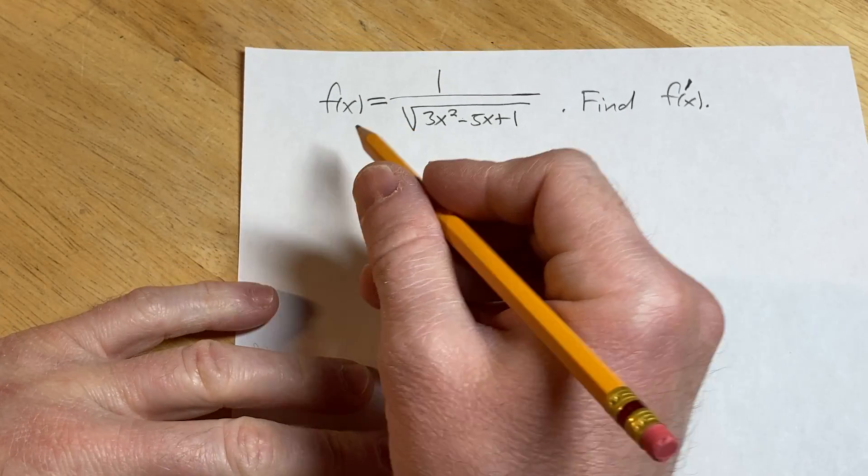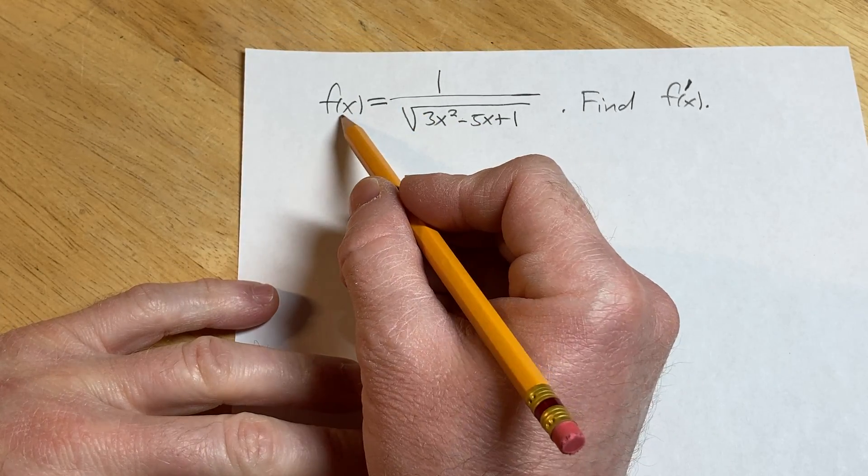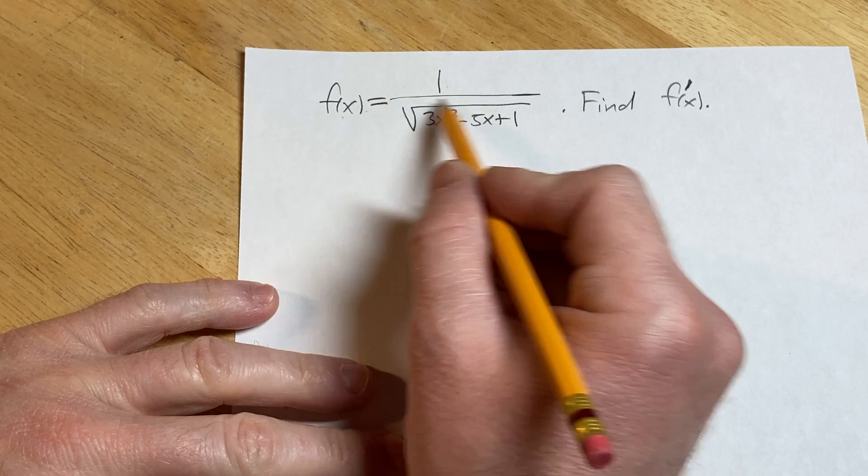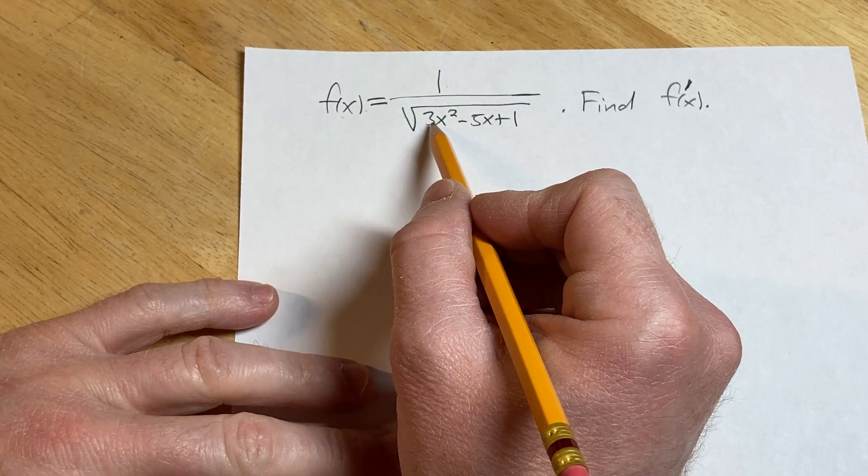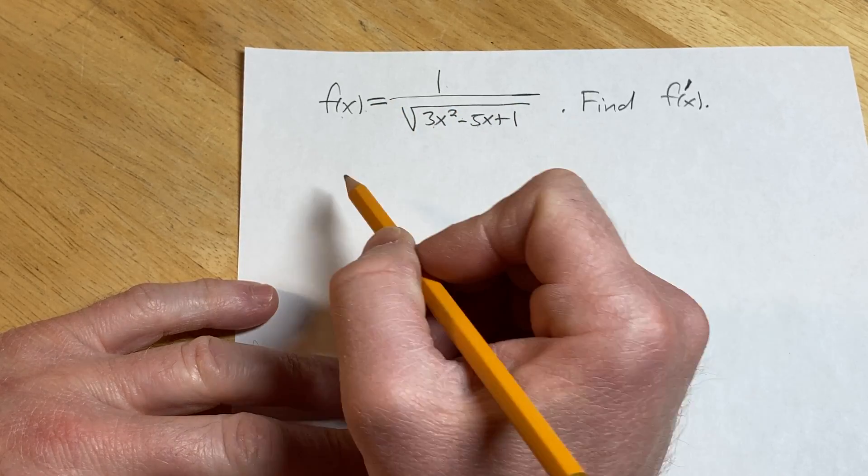Hi, in this video we are going to find a derivative. We have the function f of x equals 1 divided by the square root of 3x squared minus 5x plus 1.